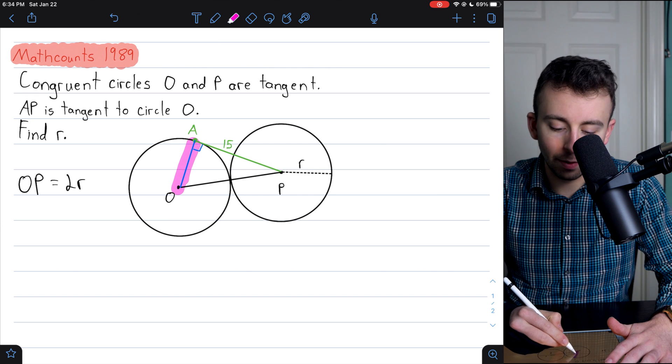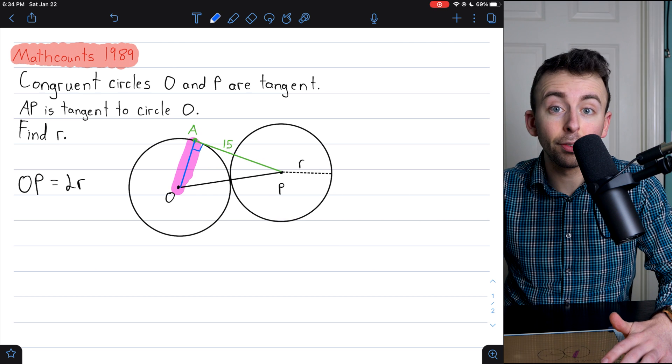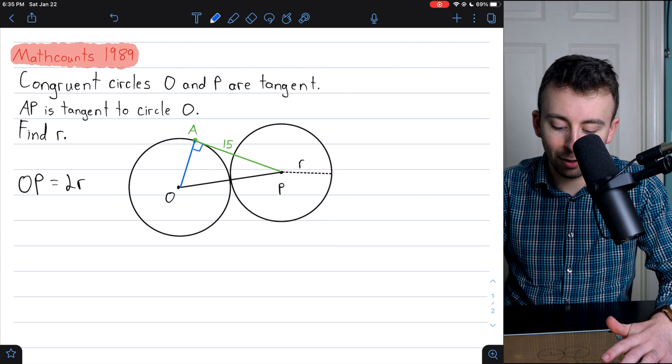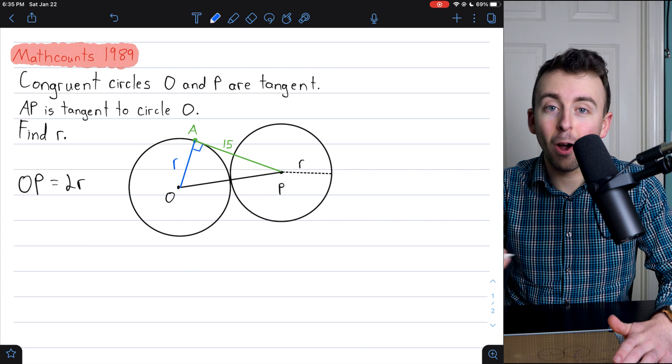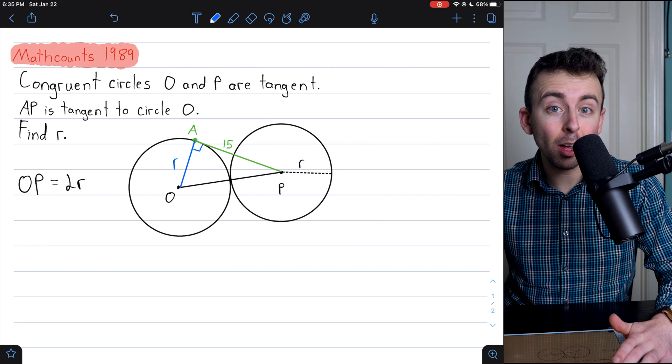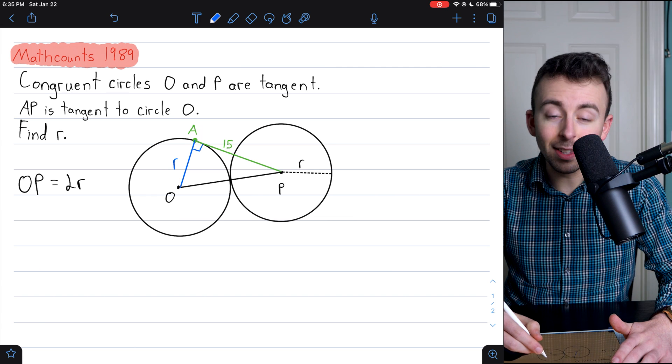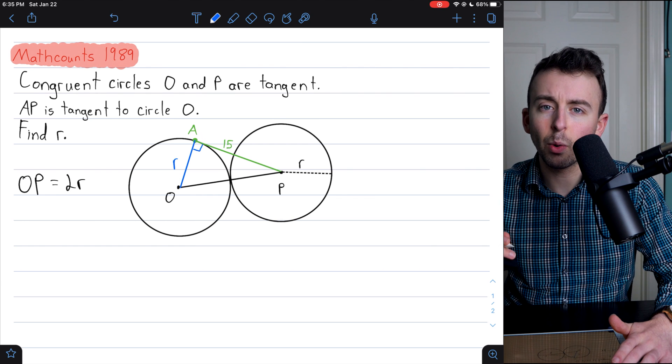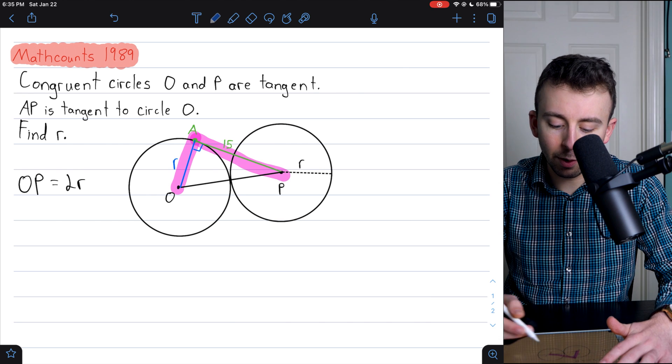And of course, that means we can use the Pythagorean theorem. What's the length of segment OA? Well, it's a radius of circle O. And of course, circle O is congruent to circle P. So its length is just R. Its length is just R, that radius length that we're trying to solve for. And we can solve for it now by just using the Pythagorean theorem.